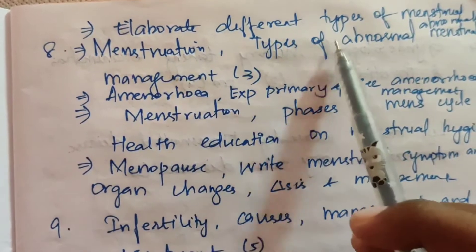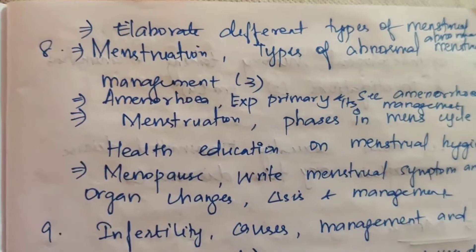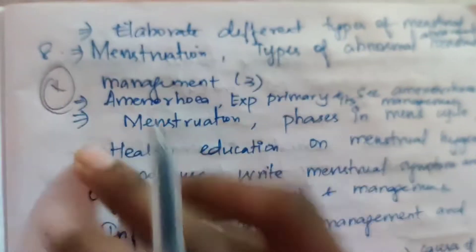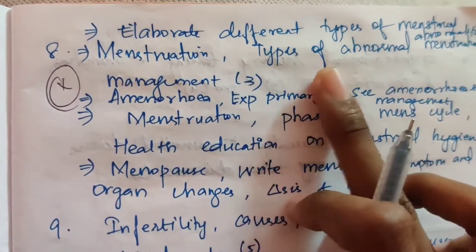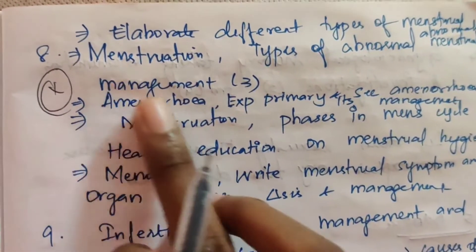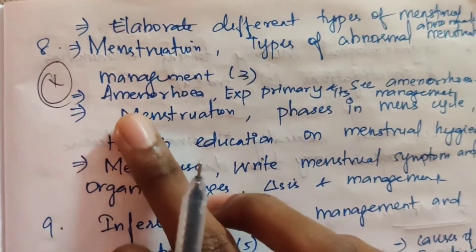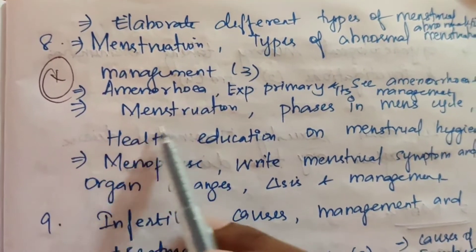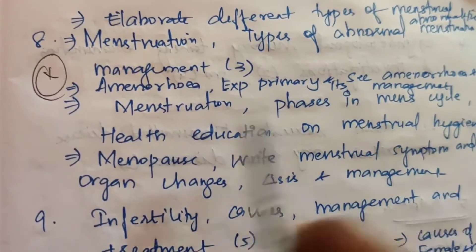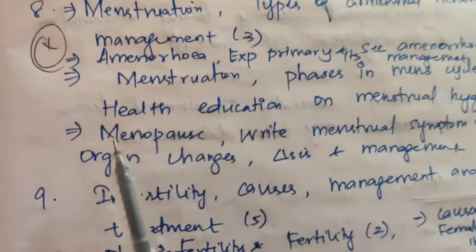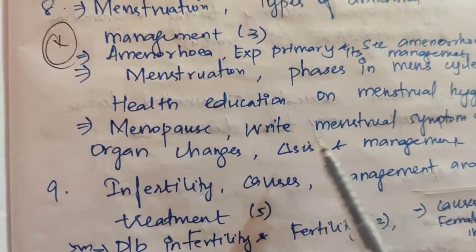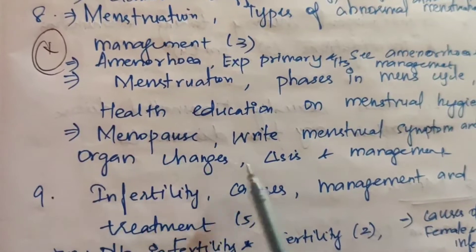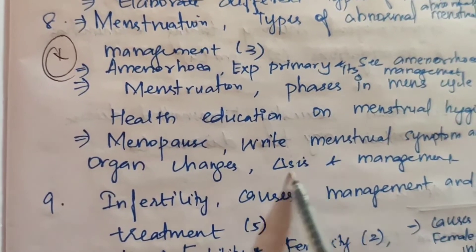Eighth one: elaborate different types of menstrual abnormalities — very important topic. Types of abnormal menstruation and management — three times. Also covered: dysmenorrhea, explaining primary and secondary dysmenorrhea and its management; menstruation phases in the menstrual cycle; health education on menstrual hygiene; menopause — define menopause, signs and symptoms, organ changes, diagnosis and management.